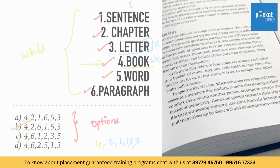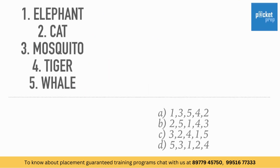This will make your solving easier. So, the answer here is B. Let's see another example. Here are the set of words: elephant, cat, mosquito, tiger, whale. Look for the options again.